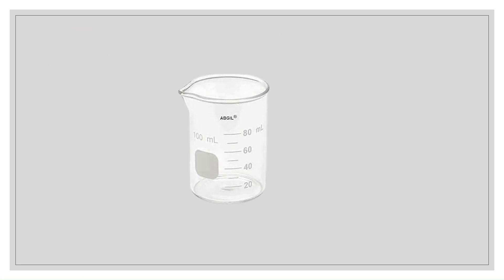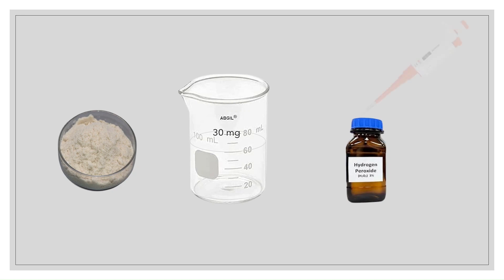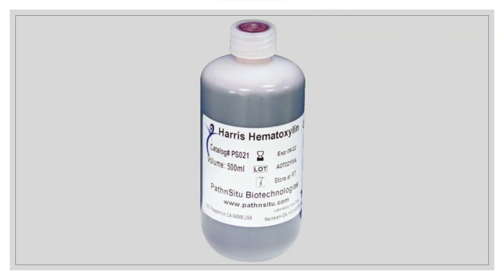Fifth is working substrate: add 30 mg of DAB in 60 ml of buffer, add 120 microliter hydrogen peroxide and mix it. This serves as working substrate. Counter stain required is hematoxylin.